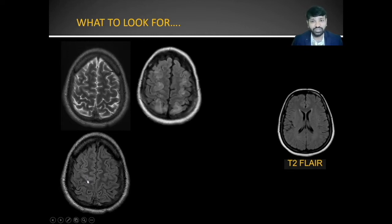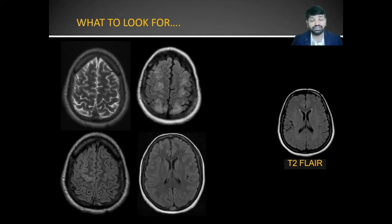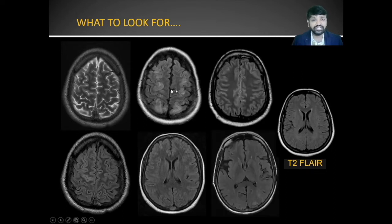When looking at the FLAIR sequence, always look for any abnormal bright signals either in the cortex, or in the white matter, or in the bone. More importantly, look at the sulcal spaces, because the CSF in the sulcal spaces should be completely suppressed — thereby the normal sulcal spaces should not give any signal on FLAIR.